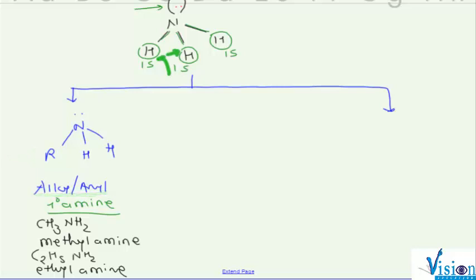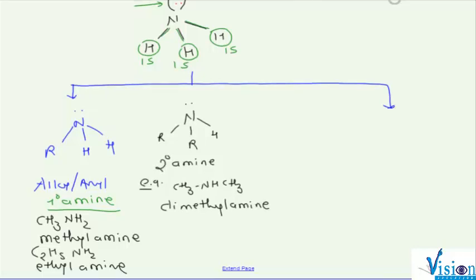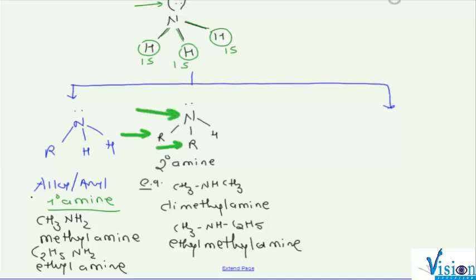Similarly, if two of the hydrogen atoms are being replaced by two organic groups, then we have secondary amine. For example, CH3NHCH3, we call it dimethylamine. Or if I give you another example, ethylmethylamine. So here we are saying that if there are two R groups with nitrogen, specifically with nitrogen, we call them secondary amines.